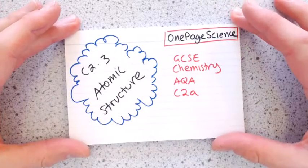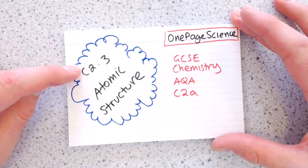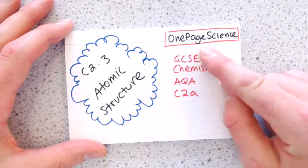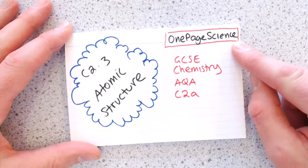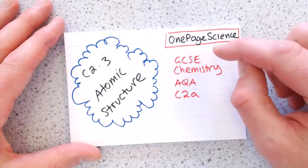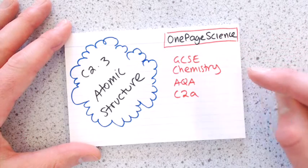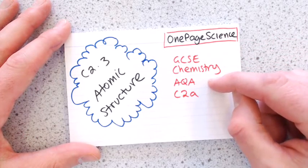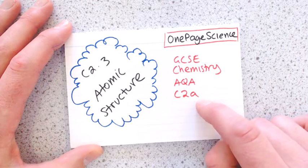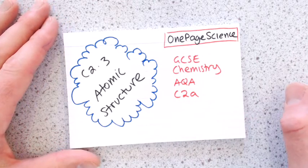So here's the next deck of revision cards for C2.3, Atomic Structure. That's just a reminder of my YouTube channel, it's called One Page Science. Make sure you search that as one word when you search on YouTube. This is GCSE Chemistry, AQA exam board, and this is the last topic in C2A. So if you do additional science, this will be on your paper one.